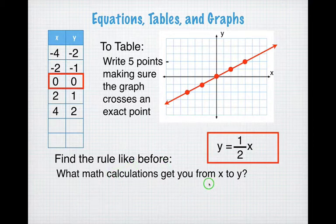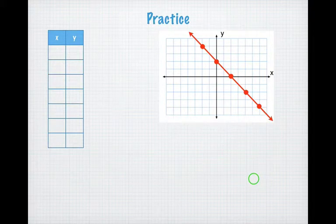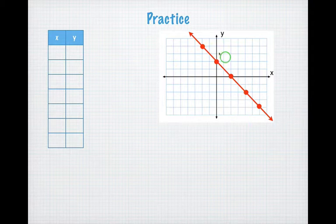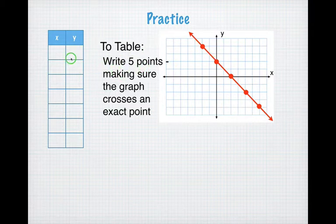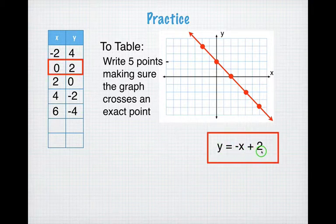I'm about to switch slides, and you guys will get a practice. Make sure you have this all written down. The sub should pause the video so that you guys can fill out the rest of the information. You should have your answer by now. For the table, you've got to write at least five points — here are the five points. And your rule is y equals negative x plus 2.